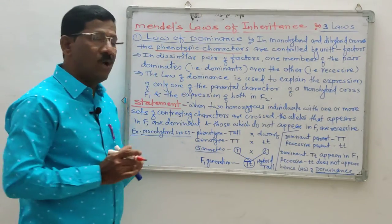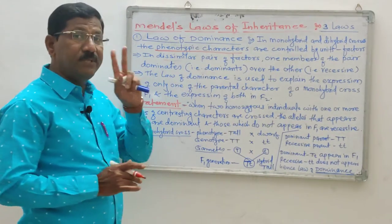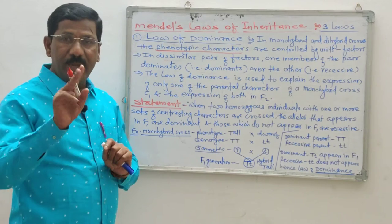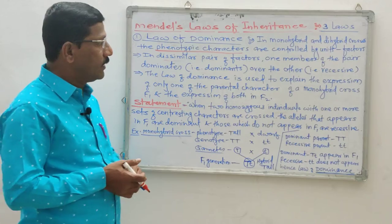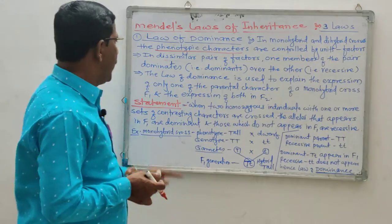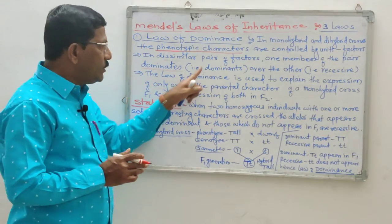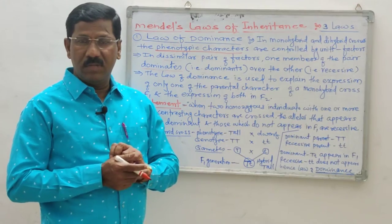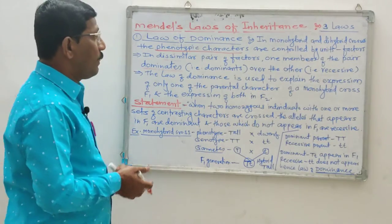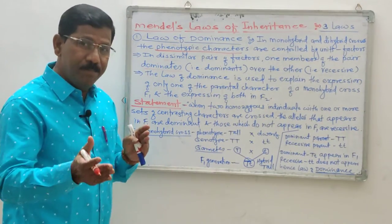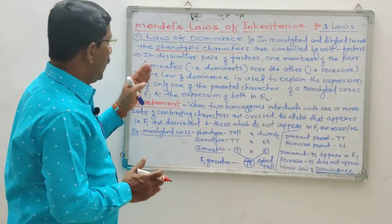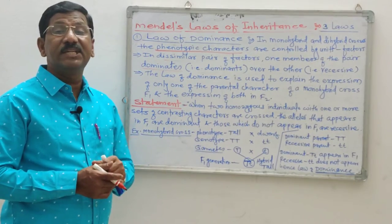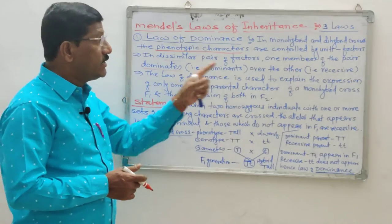In dissimilar pairs of factors — that means each pair includes two factors — one member of the pair is dominant and that dominant character overlaps the other. The other becomes recessive. The dominant character always overlaps the recessive character. The dominant character is denoted by a capital letter and the recessive character is denoted by a small letter.